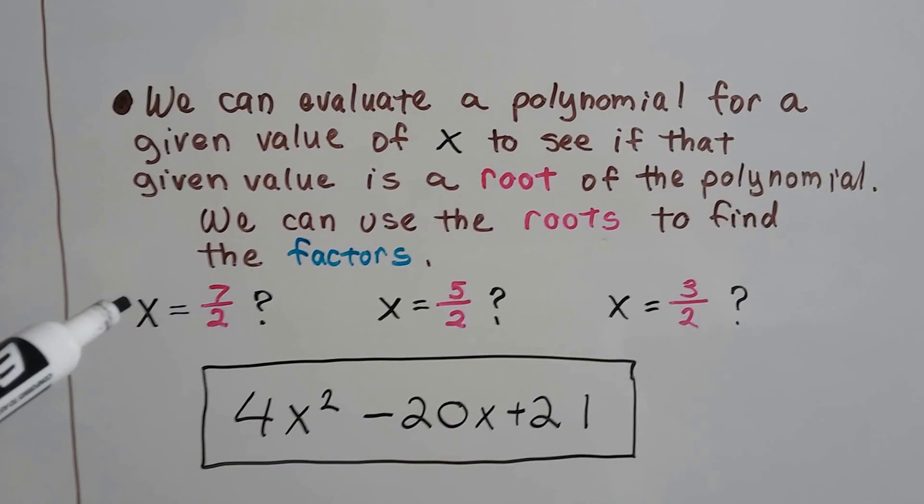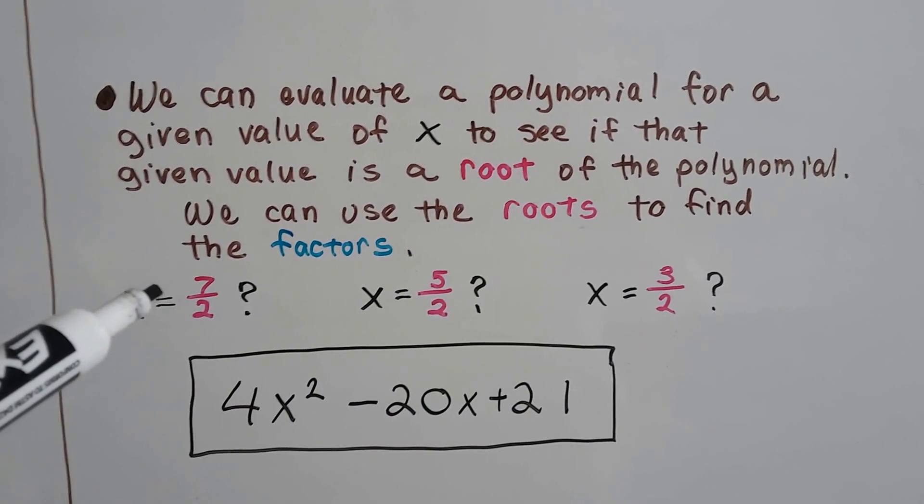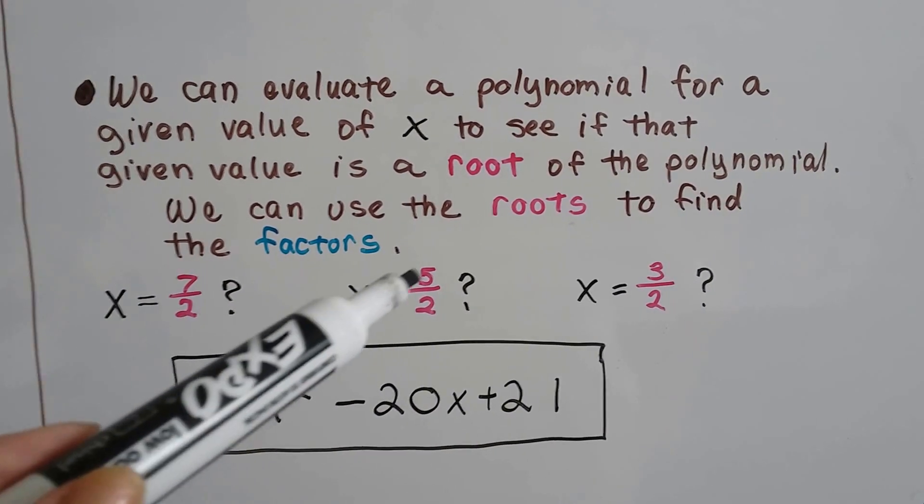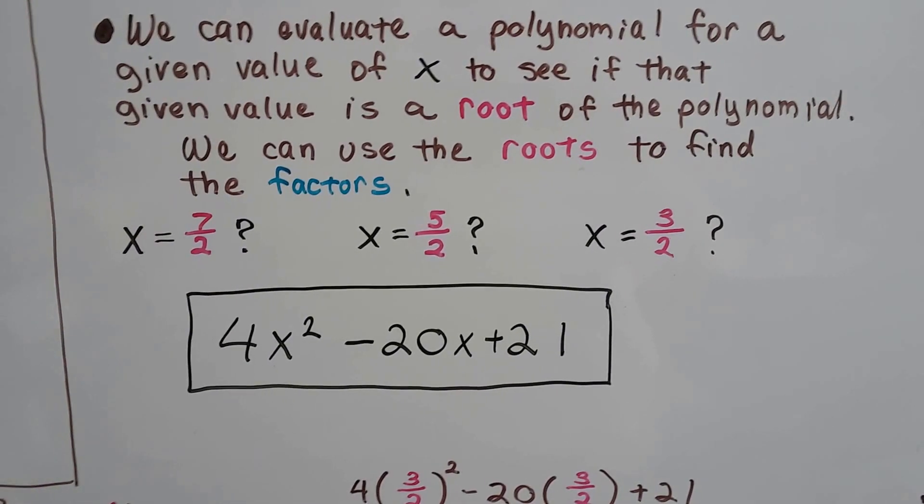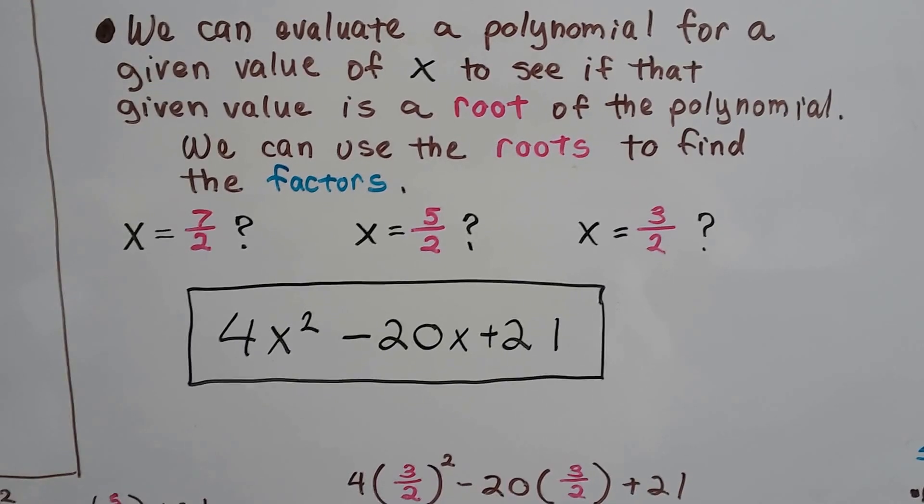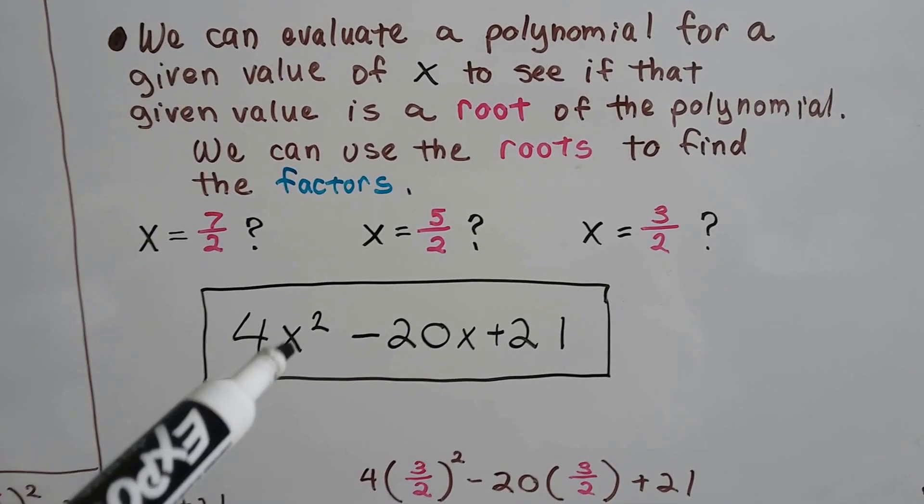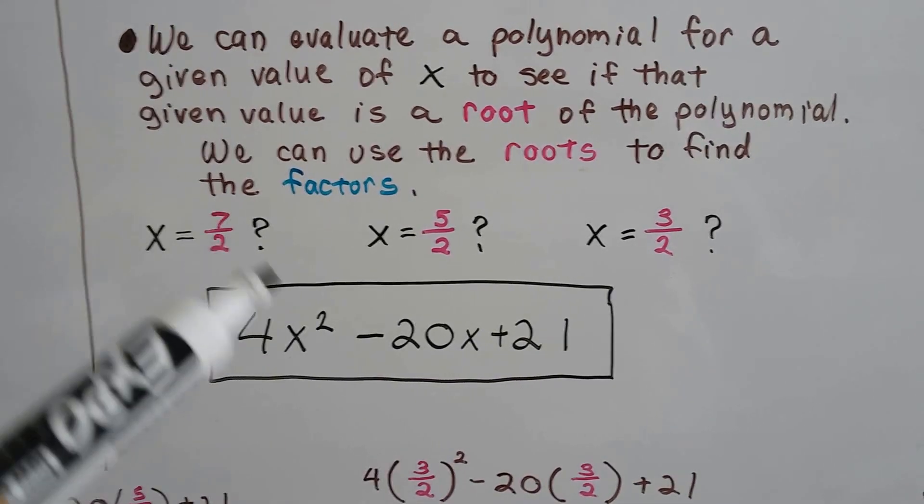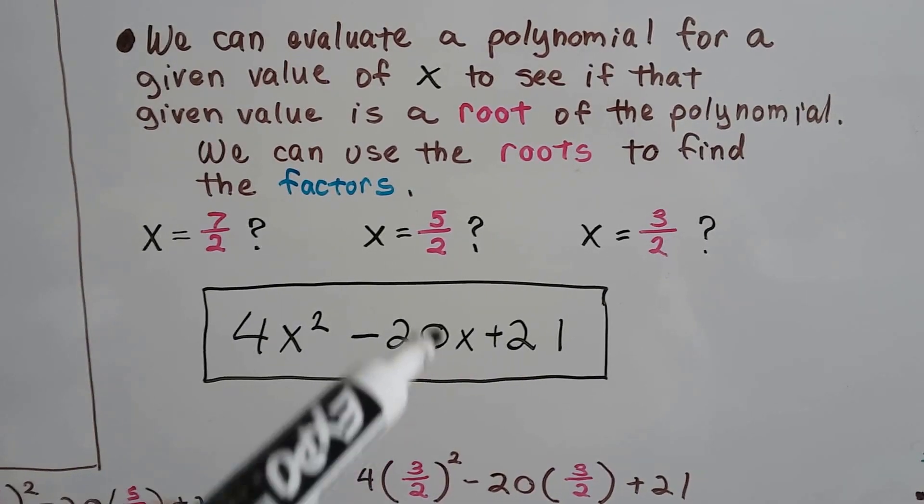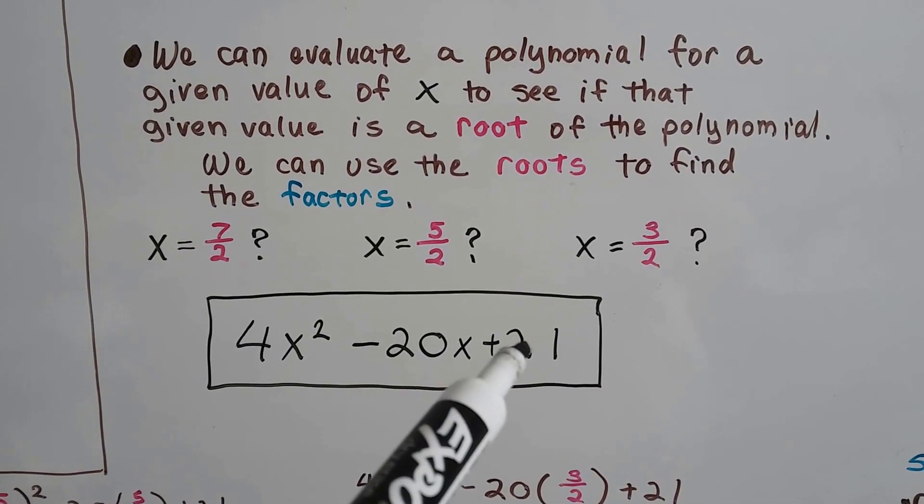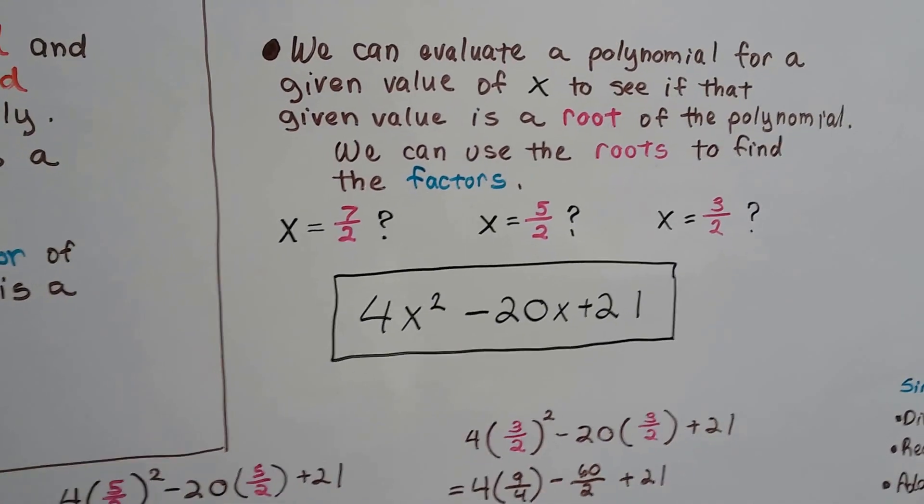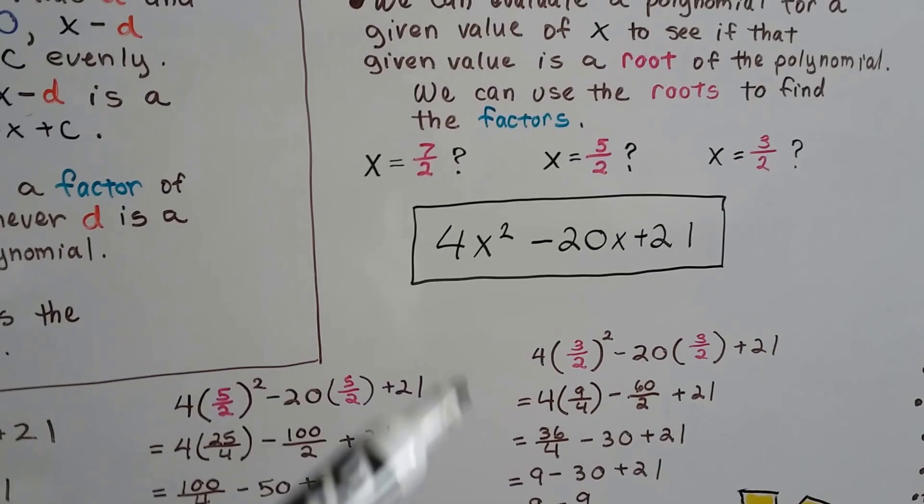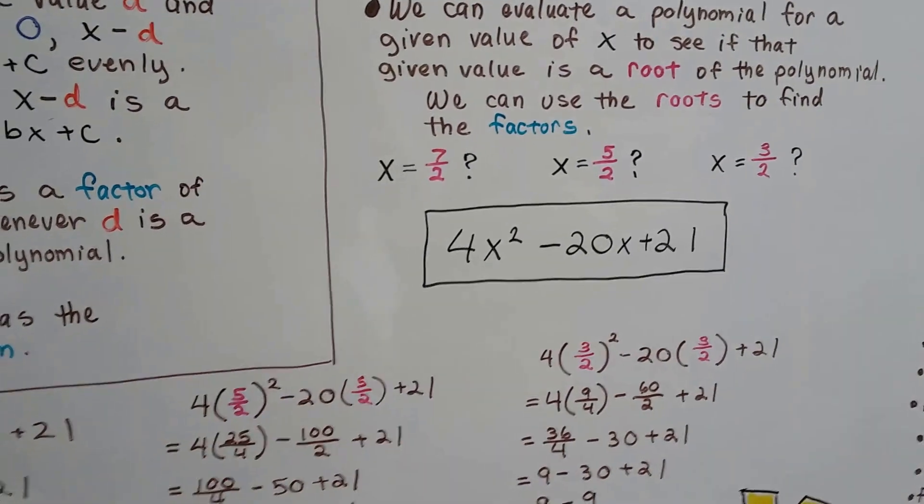And then we can use those roots to find the factors. So we're going to test to see if x can be equal to 7 halves or to 5 halves or to 3 halves for this polynomial, 4x squared minus 20x plus 21. We're going to plug in these numbers for x. And then we're going to do it for the 7 halves. Then we're going to try it again for 5 halves and then we're going to try it again for 3 halves to see if it makes it equal zero so that the roots, see if they prove the roots.